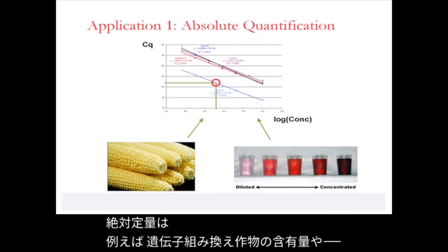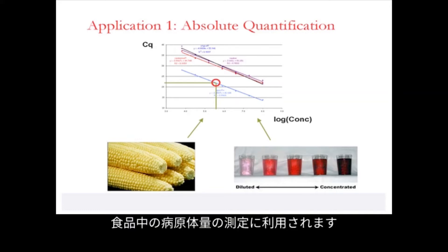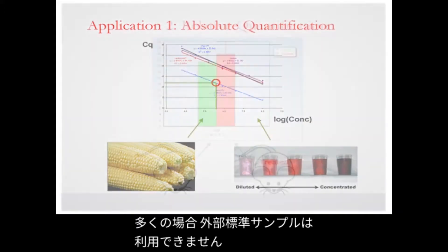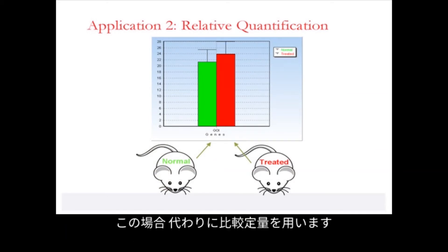Absolute quantification has applications, for example, to measure quantities of genetically modified organisms or pathogen content in foodstuff. In many cases a standard sample is not available, and for those applications we may instead use relative quantification.